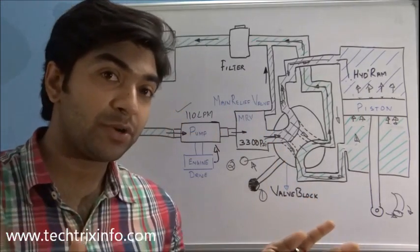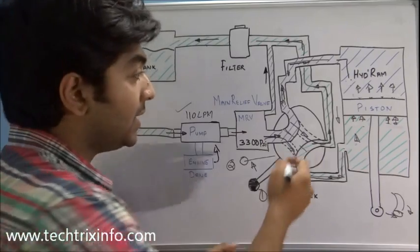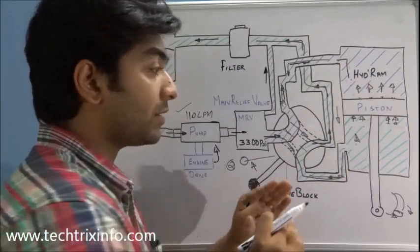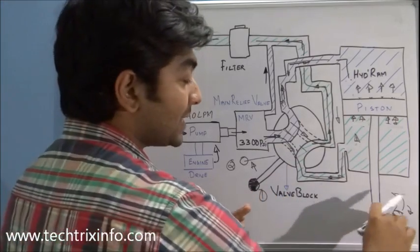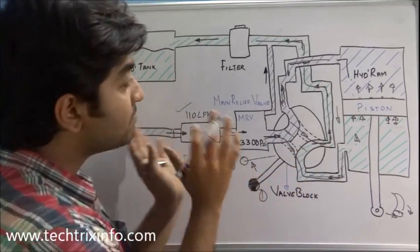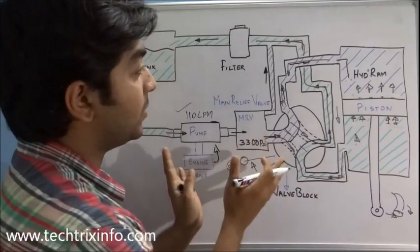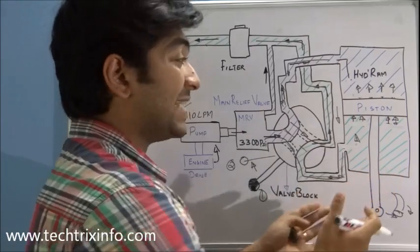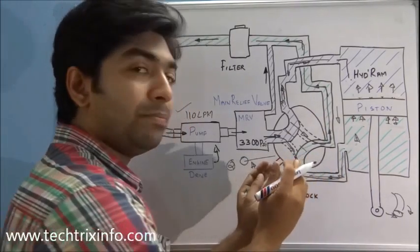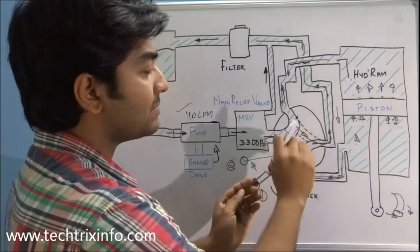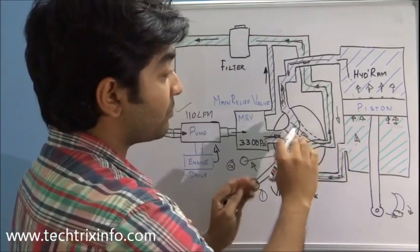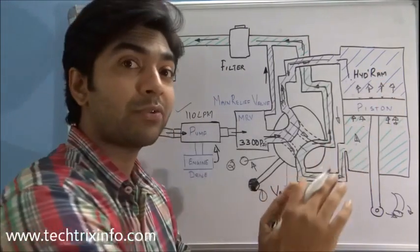This is simply how it works in a JCB machine — you move the lever of the valve block, the lines switch according to the lever direction, and the hydraulic ram reacts accordingly. Whatever bucket or object is connected will move as per the lever selection. In a backhoe loader machine we can have 12 hydraulic rams, so the valve block system becomes more complicated, but the basic operation remains the same — just with more ports and galleries.